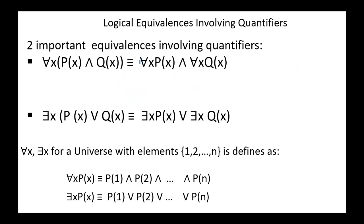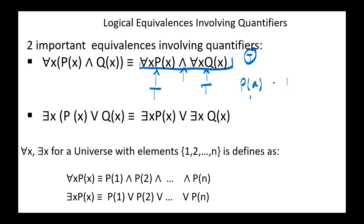Next, suppose that the second statement is true. Since we have here a conjunction, it follows that each of these components is also true. If A is in the domain, then P(A) is true, and Q(A) is also true. It follows that for all x, P(x) conjunction Q(x) is also true. Hence proved.